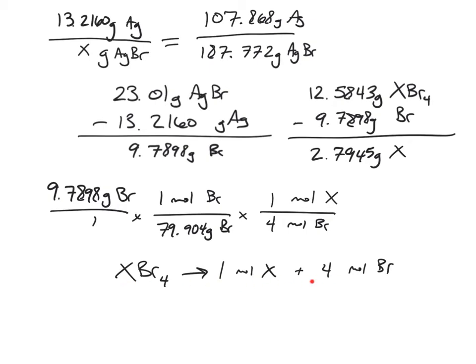If I took one mole of XBr4, I get one mole of X and four moles of Br. So I'm going to use this ratio right here, four moles of Br for every one mole of X. If I hit equals, this is going to give me the moles of X that came from this number of grams of XBr.